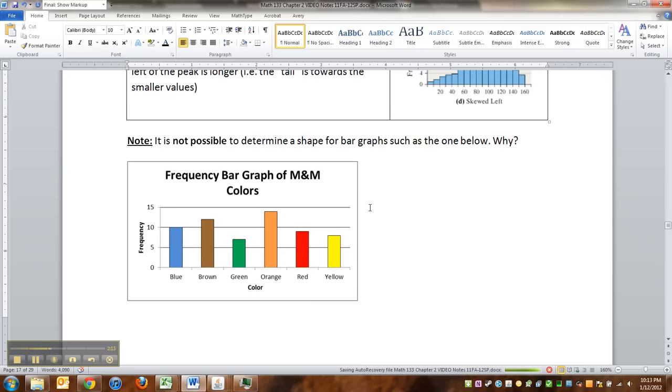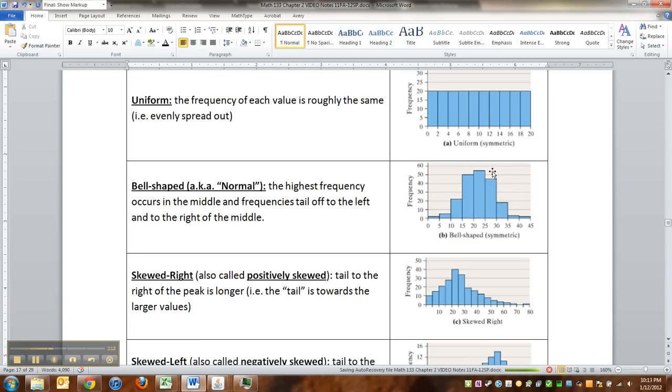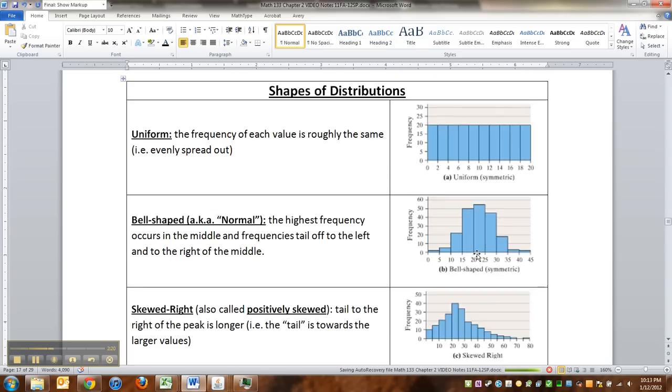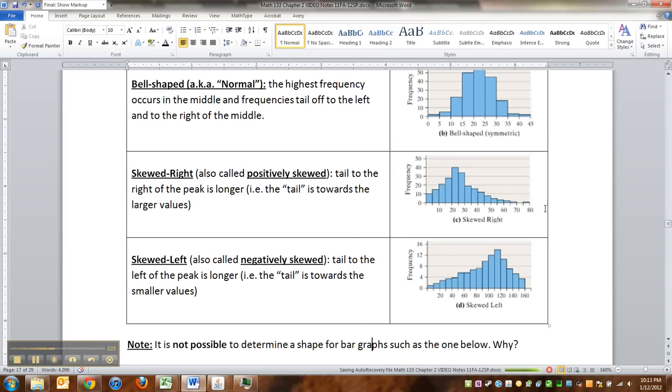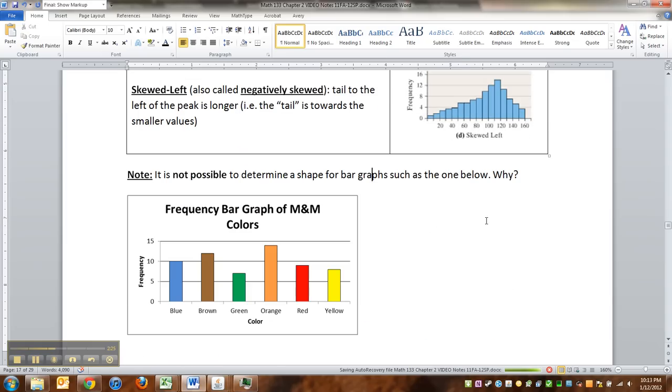It's not possible to determine a shape for bar graphs. Look at all of these. These are all histograms. Histograms use numbers as their horizontal axis, because it's quantitative data, and quantitative data has order.